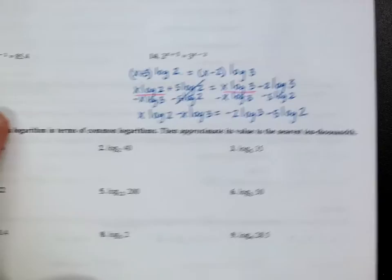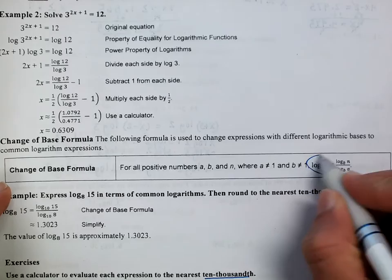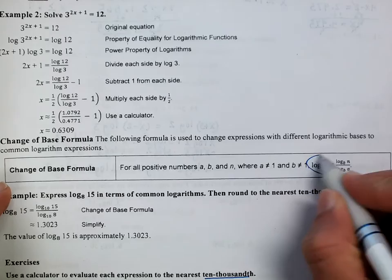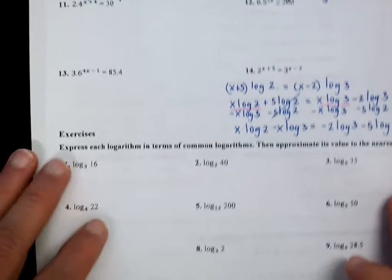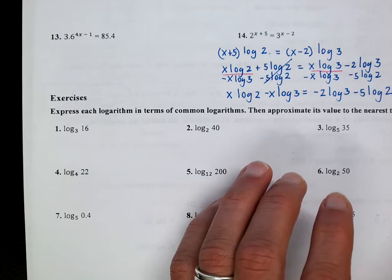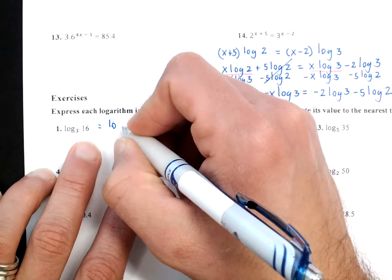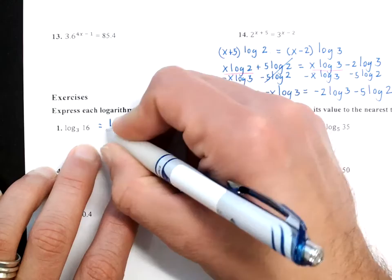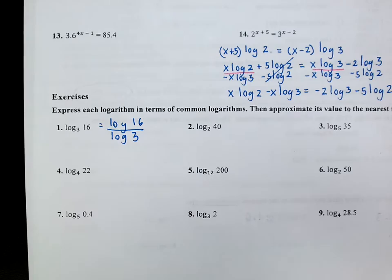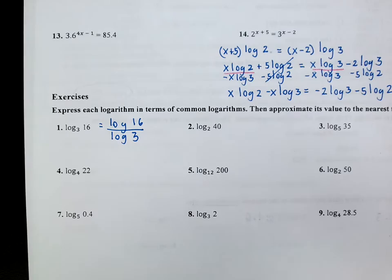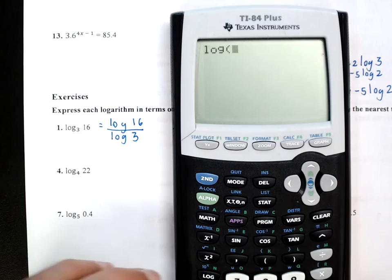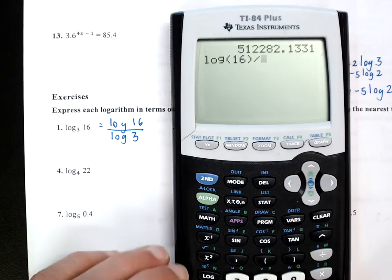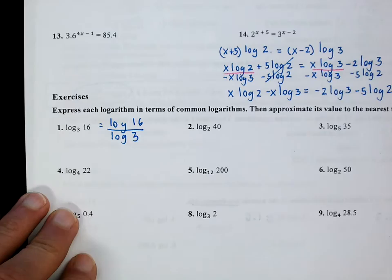At the end we have the change-of-base rule. The formula is: log base b of a equals log of a divided by log of b. So if you have a log base 3 of 16, you write it as log of 16 divided by log of 3. That gives an approximation of the answer. In this case it's approximately 2.5.